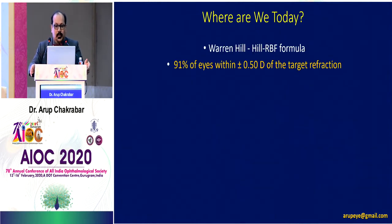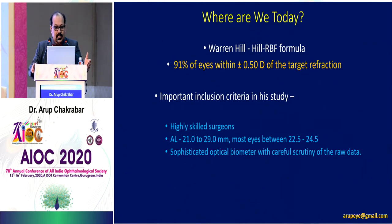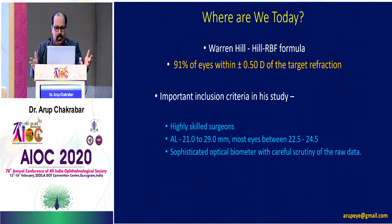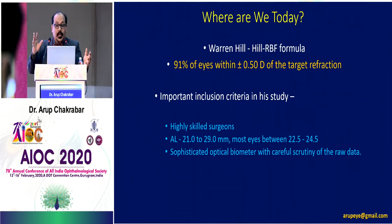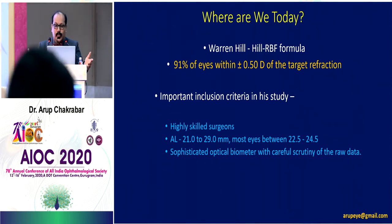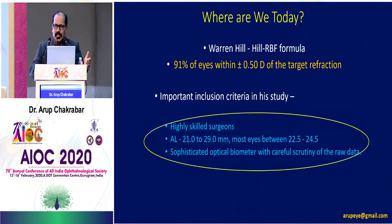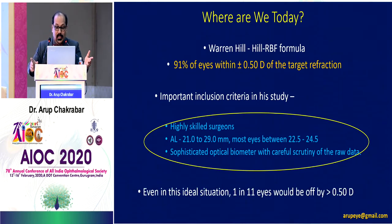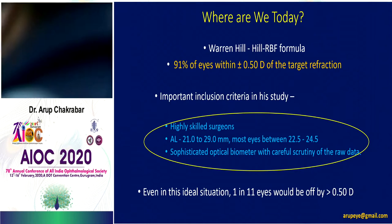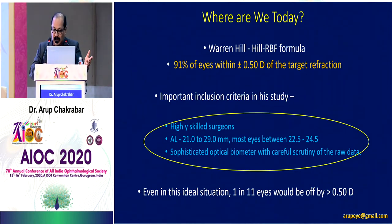This is Warren Hill's database. He analyzed a group of highly skilled surgeons who operated on eyes within a 22.5 to 24.5 millimeter axial length with a sophisticated optical biometer, and found that they were achieving 90–91% of eyes within plus or minus 0.5 diopter of the target refraction post-operatively. This is basically the benchmark, though it also means that one out of 11 eyes would be off by 0.5 diopter. But this is where we have reached, and there is still some way to go.